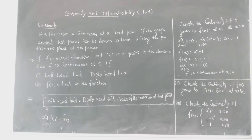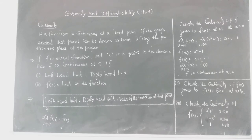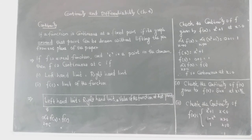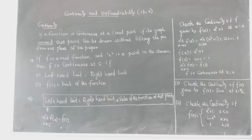So limit as x tends to 0 of f(x) equals limit as x tends to 0 of x² + 1, which equals 0² + 1 = 1. Then for the value of the function, f(x) = x² + 1, so f(0) = 0² + 1 = 1. We need to find the value of the function when x = 0, and that simplifies to 1.